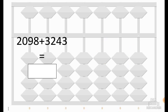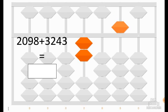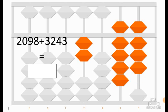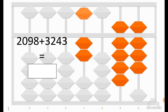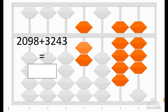The third example is a little bit harder. We would like to add 2098 plus 3243. We write the first number on the soroban: 2098. To add 3000, we cannot add 3 directly, so we add 5 thousands and we remove 2000. And we have added 3000.